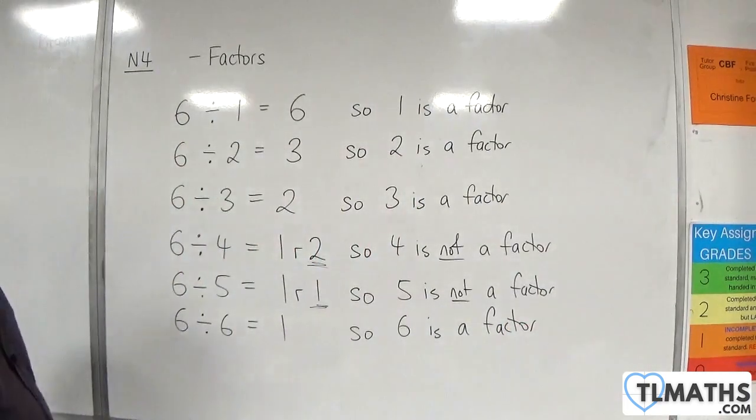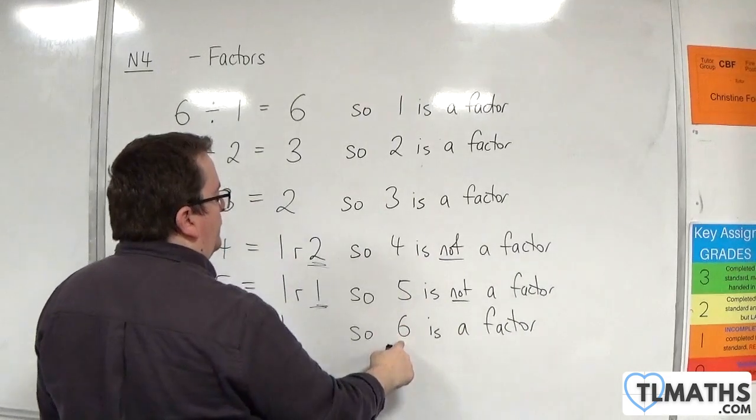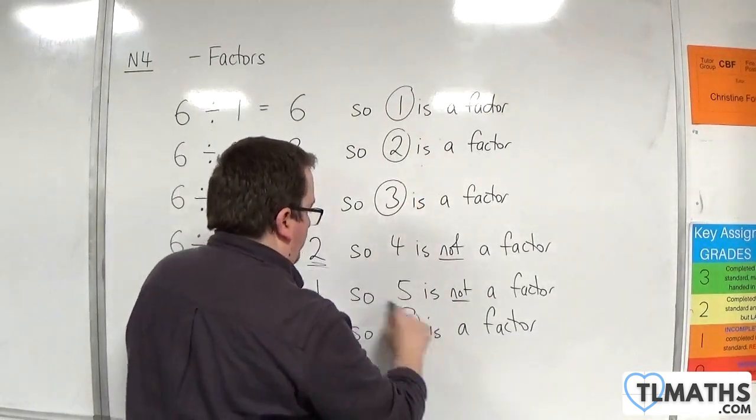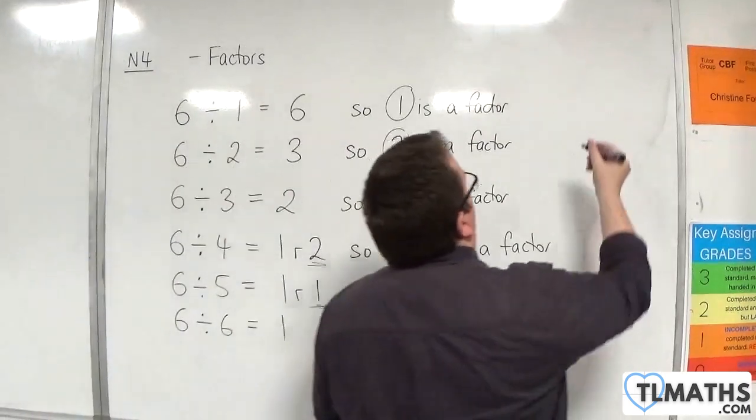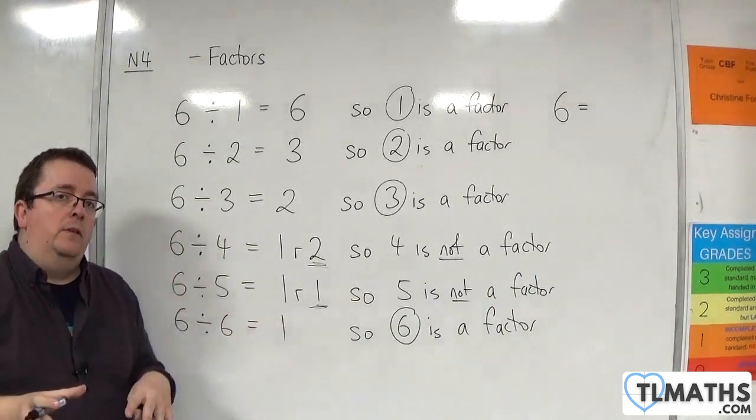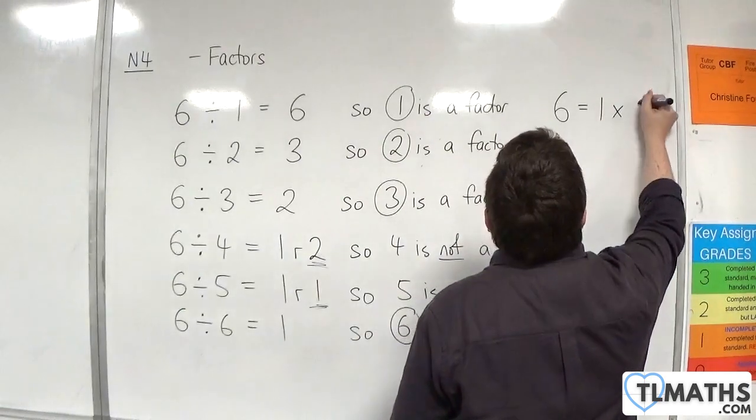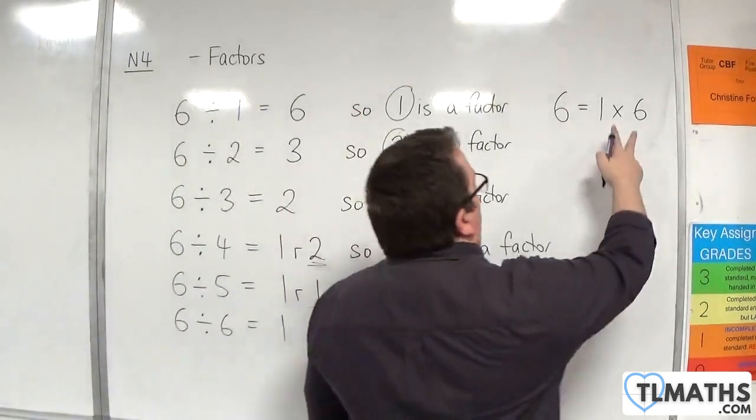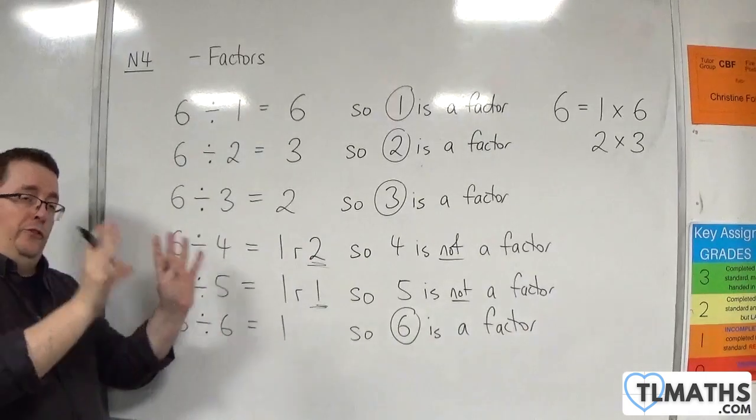That means the factors of 6 are 1, 2, 3, and 6. Because we've got those 4, there is a neat way of being able to write that. When you're trying to find the factors of 6, you can look for ways of how you can multiply 2 positive integers together to make that value. 6 can be found by multiplying 1 by 6. We can also multiply 2 and 3 together. 2 times 3 is 6.